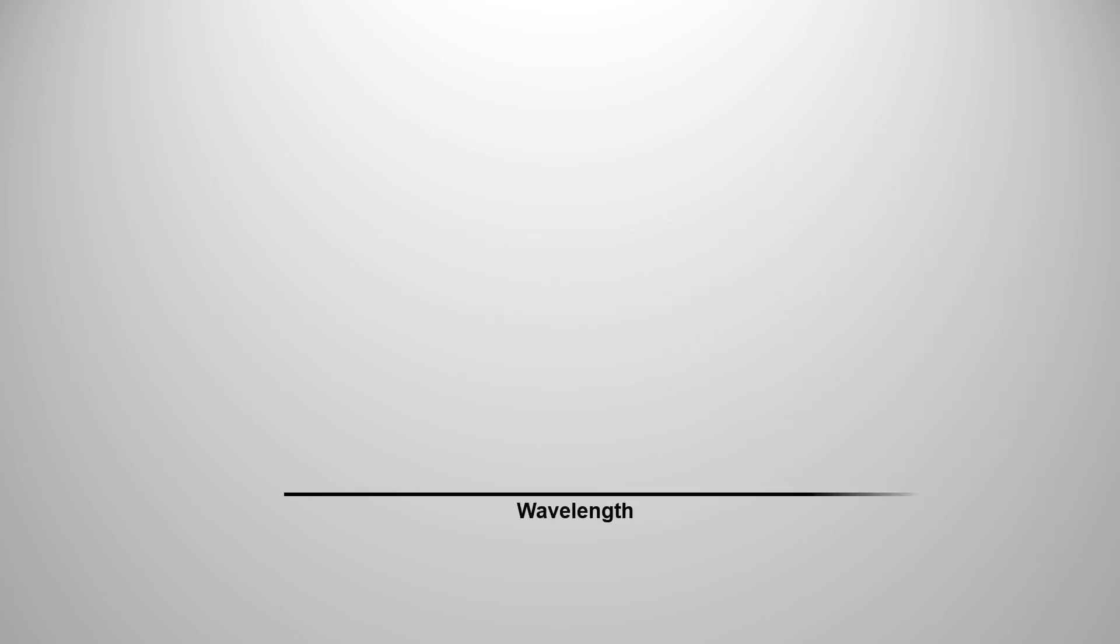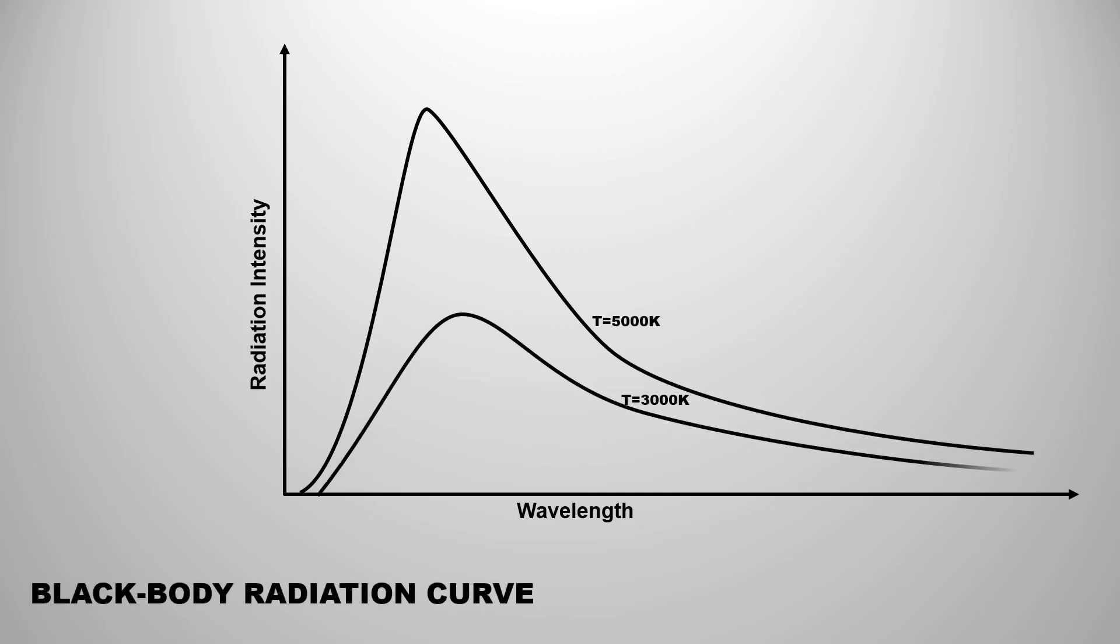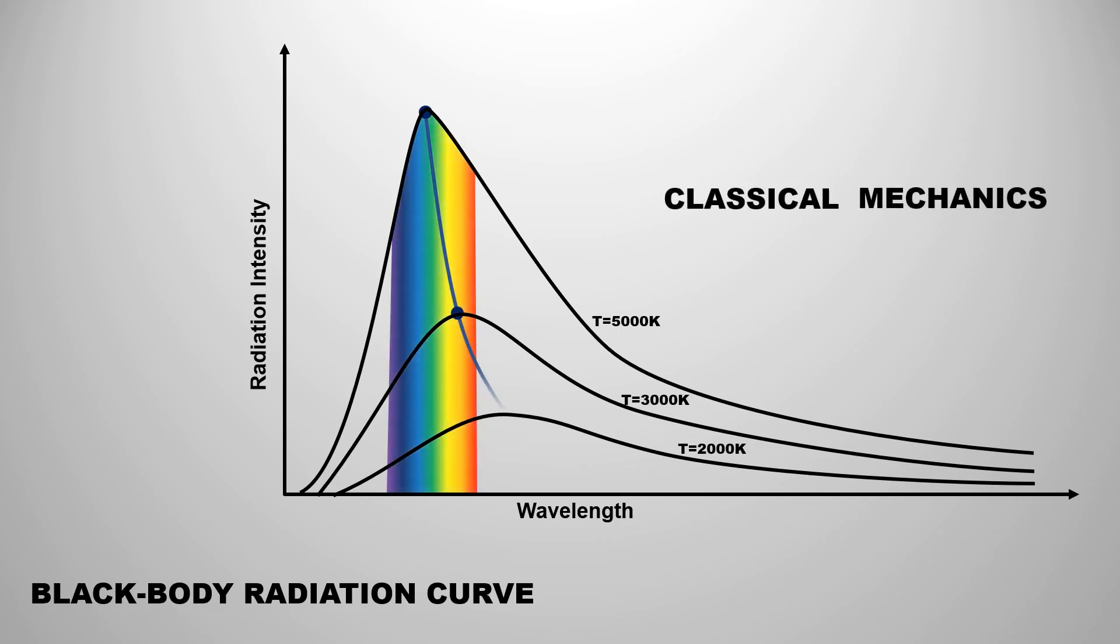When this radiation from the black body was traced on the graph, classical mechanics failed to explain this curve. Then Max Planck explained it by introducing quantum mechanics.